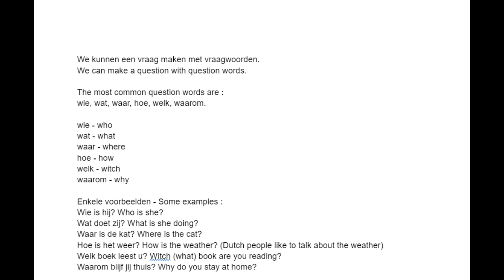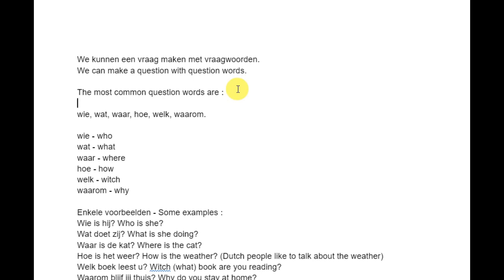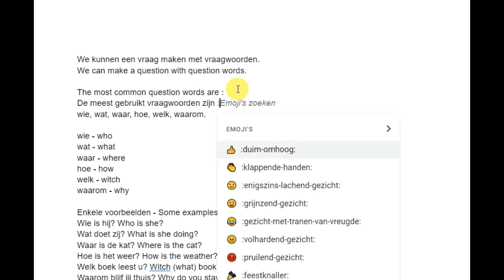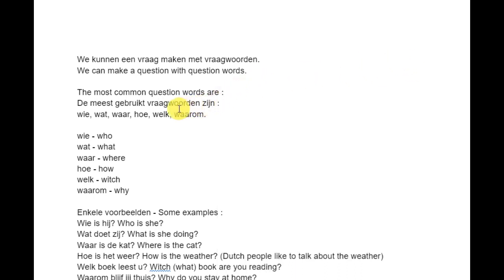We can make a question with question words. The most common question words in Dutch are: Wie, wat, waar, hoe, welk, waarom. In English: Wie is who, wat is what, waar is where, hoe is how, welk is which, waarom is why.